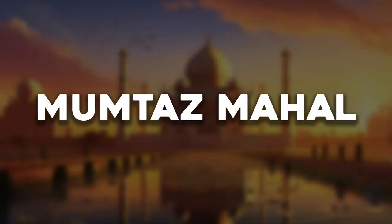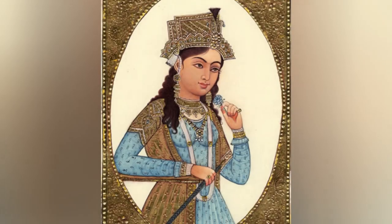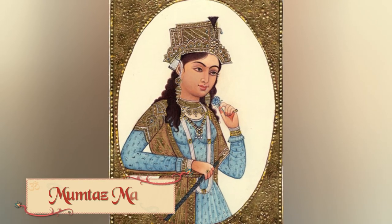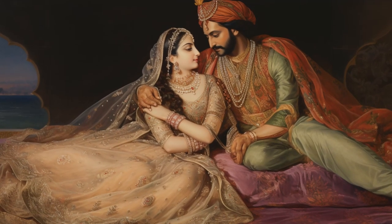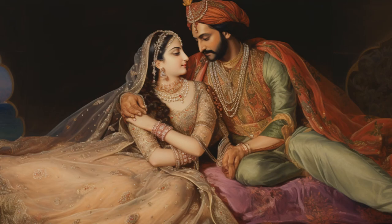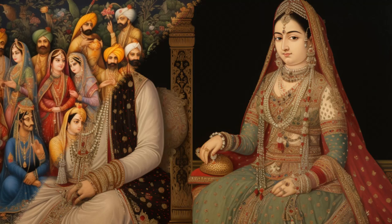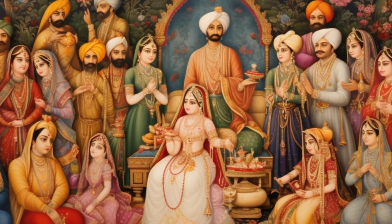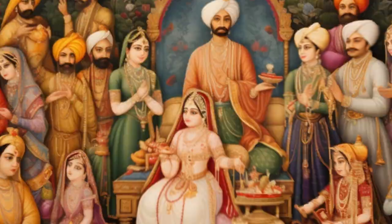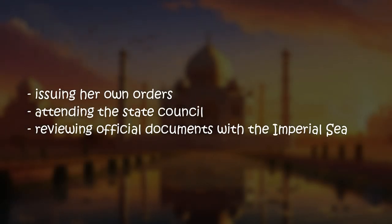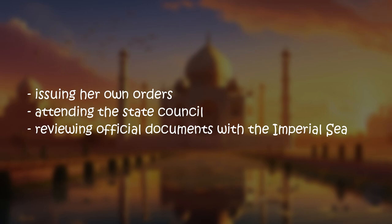Now let's talk about the woman who this entire story revolves around: Shah Jahan's most beloved wife, Mumtaz Mahal, Persian for 'the chosen one of the palace.' Married to her as a prince when he was still 20, Shah Jahan's relationship with his wife was a happy and loving one. They had 14 children together, out of whom seven survived into adulthood. When Shah Jahan took the throne, his wife Mumtaz was made Empress and given immense power, such as issuing her own orders, attending the State Council, and reviewing official documents with the Imperial seal.